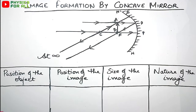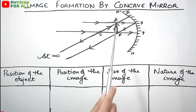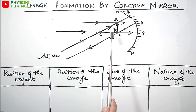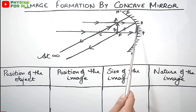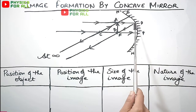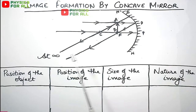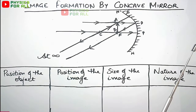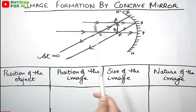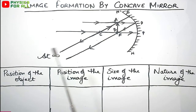In our fifth case, we have placed our object AB at focus itself. We need to consider at least two rays. The easiest one is the ray coming parallel to the principal axis — after reflecting, it will pass through the principal focus. There are just three key points: center of curvature, focus, and pole.